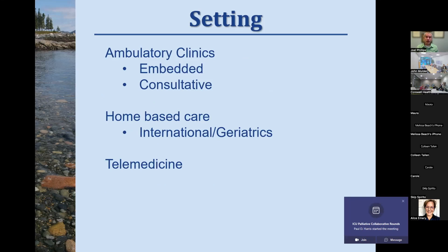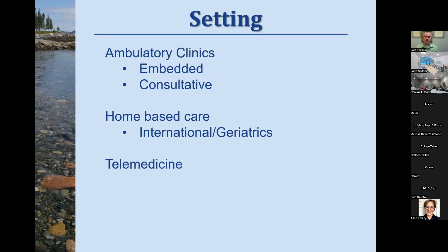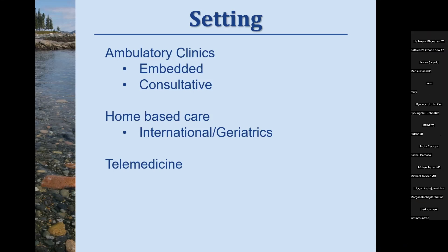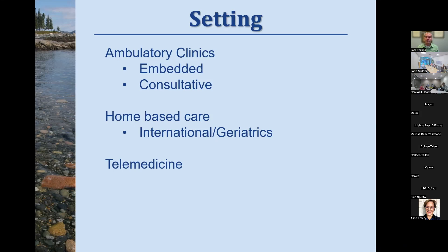Where does palliative care happen? Most often in outpatient ambulatory clinics. We have an embedded model in our ALS clinic where I see patients alongside the neuromuscular provider. I also function in a consultative model, seeing patients separately from their movement disorders doctor — they may see their movement doctor biannually or annually, while I touch base every three months, constantly adjusting medications, talking about symptoms, and ensuring patients are well-supported as things progress.